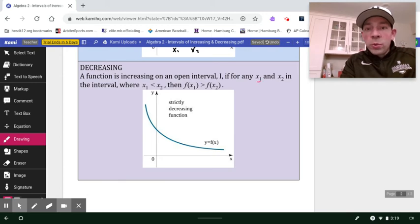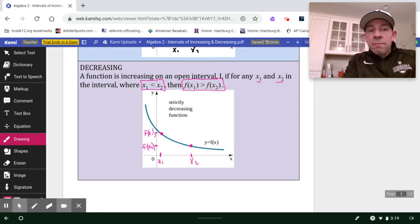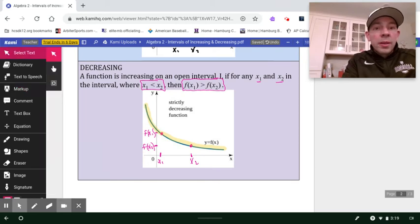So again, we've got this random X sub one and this random X sub two, where X sub one is smaller or sits to the left of X sub two. So let's just say for argument's sake, here's my X sub one, here's my X sub two. We just pick two random points. And what you'll notice is right here on the Y axis is your F of X sub one, and then over here is your F of X sub two. And as long as F of X sub one is greater than F of X sub two, the function is said to be decreasing. And again, this is a really nice illustration of a function that is strictly decreasing on this open interval.